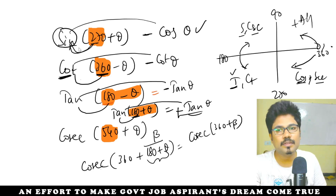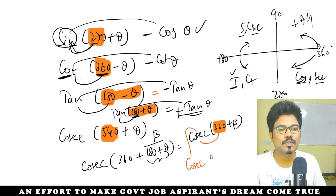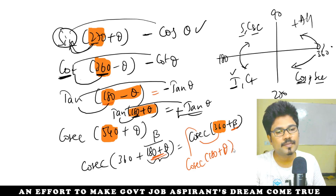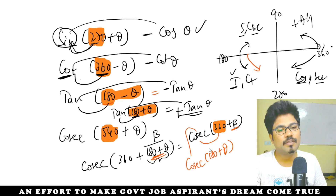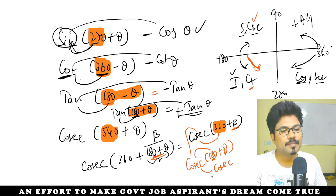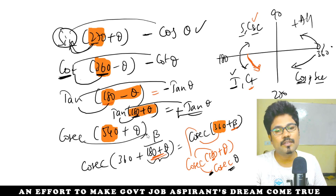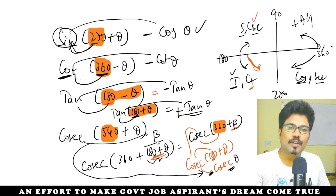Now: cosec(180 plus theta). Even multiple — function stays as cosec. 180 plus theta is in the third quadrant. In the third quadrant, only tan and cot are positive; so cosec is negative. Therefore cosec(180 plus theta) equals minus cosec theta. That means cosec(540 plus theta) equals minus cosec theta. That is the answer. You need to know this sign conversion.